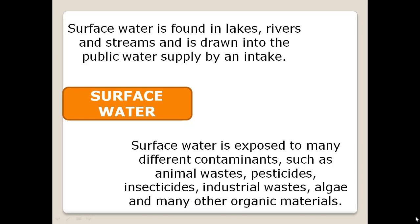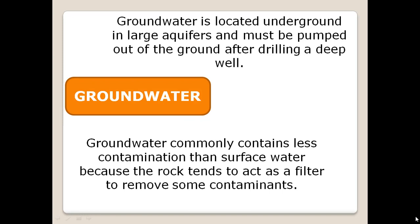Surface water is exposed to many different contaminants such as animal waste, pesticides, insecticides, industrial waste, algae, and many other organic materials. Groundwater, on the other hand, is located underground in large aquifers and must be pumped out of the ground after drilling a deep well.